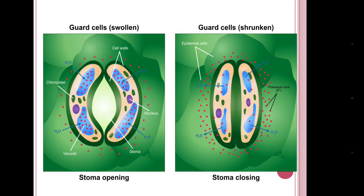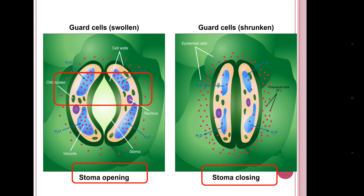Osmosis also plays a role in stomata opening and closing. When water enters into the guard cells, the cells become swollen and the stomata opens. Again, when water leaves the guard cells through osmosis, the cells become shrunken and the stomata closes.